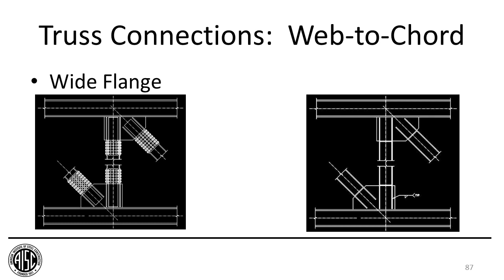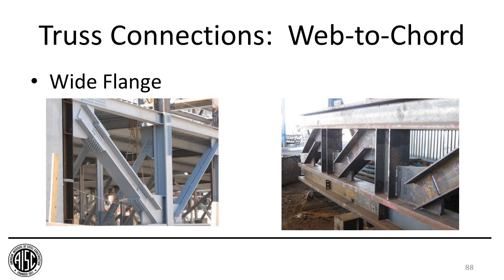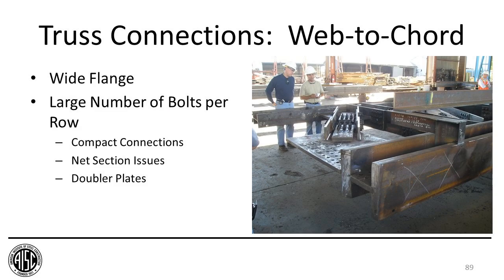With wide flanges, again you can bolt or weld them to the gusset plates. Wide flanges are often used when the web demands are high or when you have large unbraced lengths and the other shapes aren't efficient. You can get a large number of bolts per row — for a stock W14, for example, you can get quite compact connections. As mentioned, you do have net section issues that may often require a doubler plate, so make sure you're doing those checks and upsizing members to avoid doublers wherever possible.